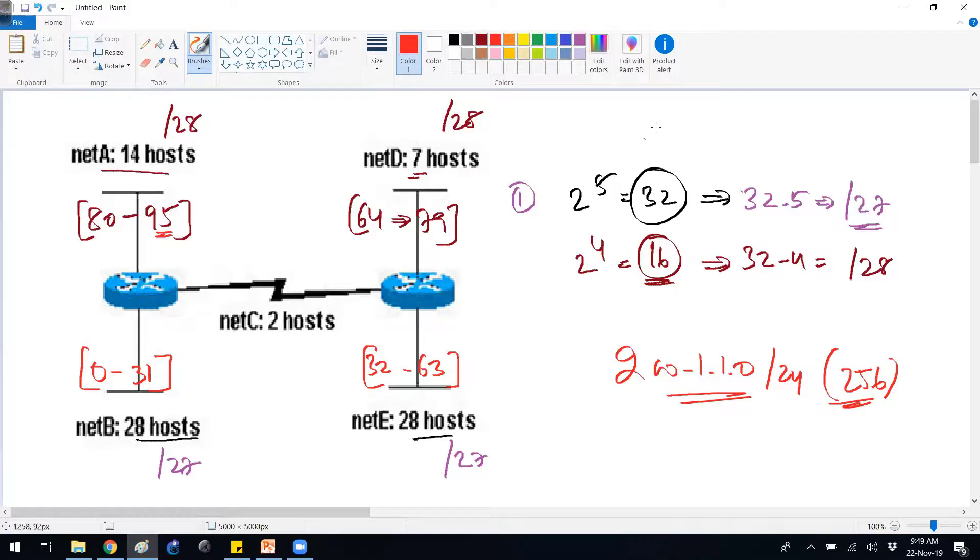From 96, again here 2 host requirements. I'll go with possible size 2 to the power of 2, 4 is a possible size. From 32, if you subtract 2, it's going to be /30. We'll be using /30 here.